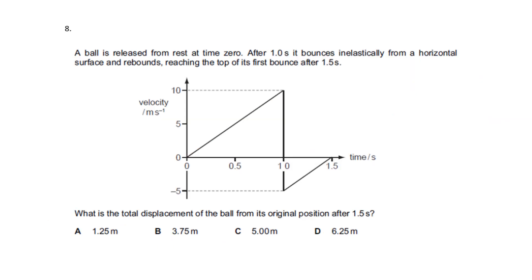Question eight: a ball is released from rest at time zero. After one second it bounces inelastically from a horizontal surface and rebounds, reaching the top of its first bounce after 1.5 seconds. What is the total displacement of the ball from its original position after 1.5 seconds?